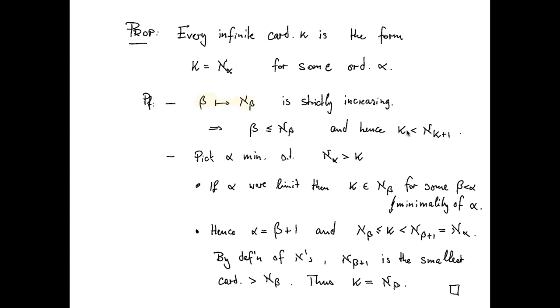Now what we do is we pick alpha minimal such that aleph sub alpha is greater than kappa. Now, if alpha were a limit, then it is not hard to see that then kappa must actually already be part of an element of an earlier aleph beta, contradicting the minimality of alpha.